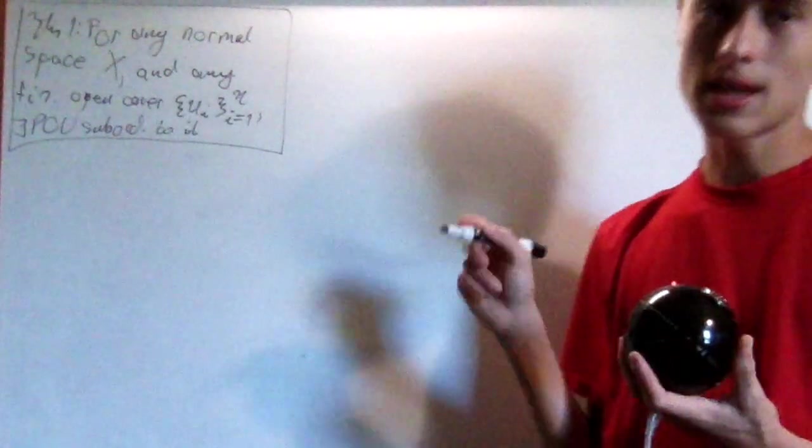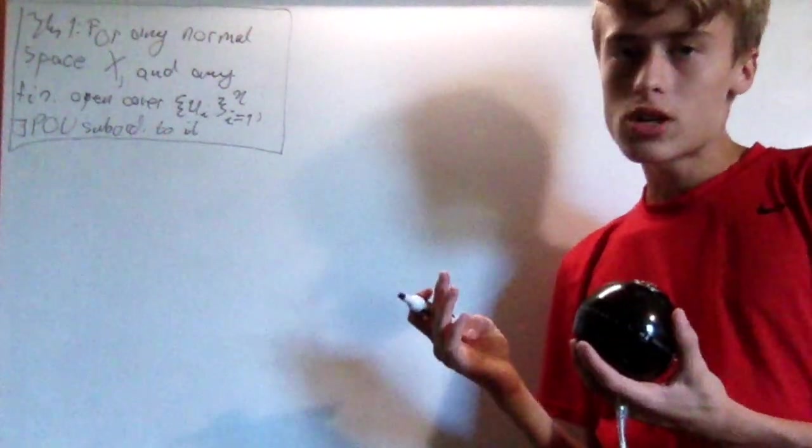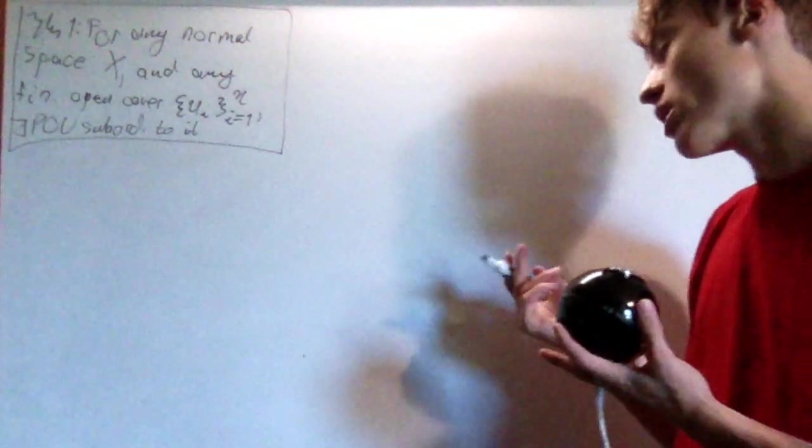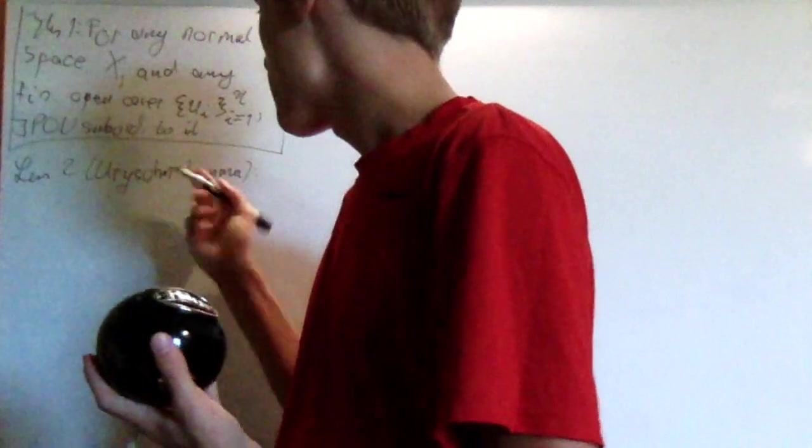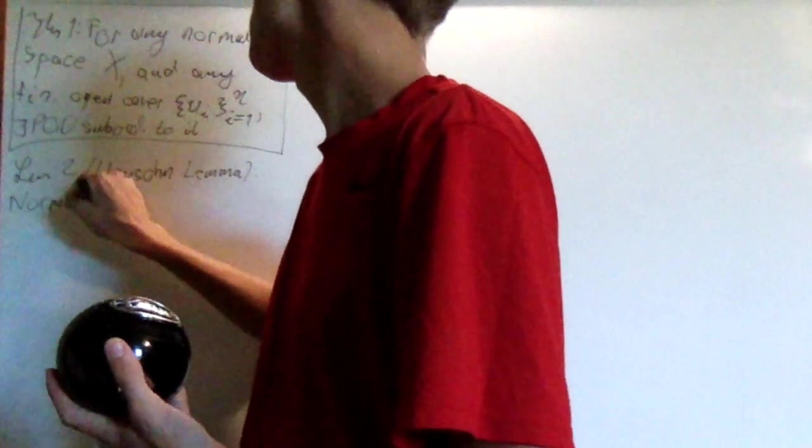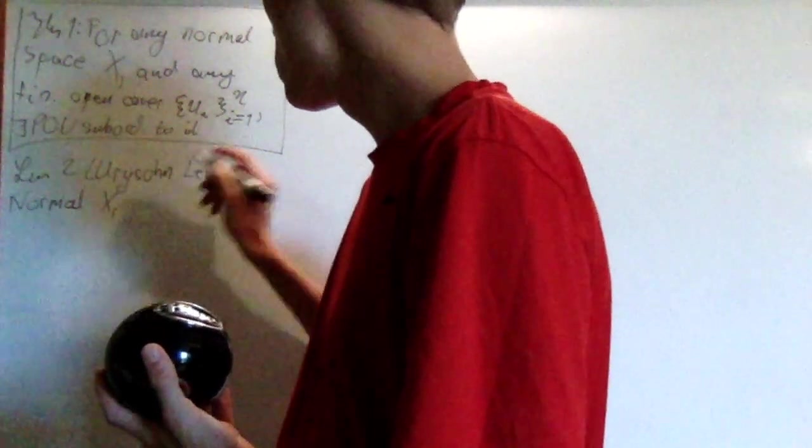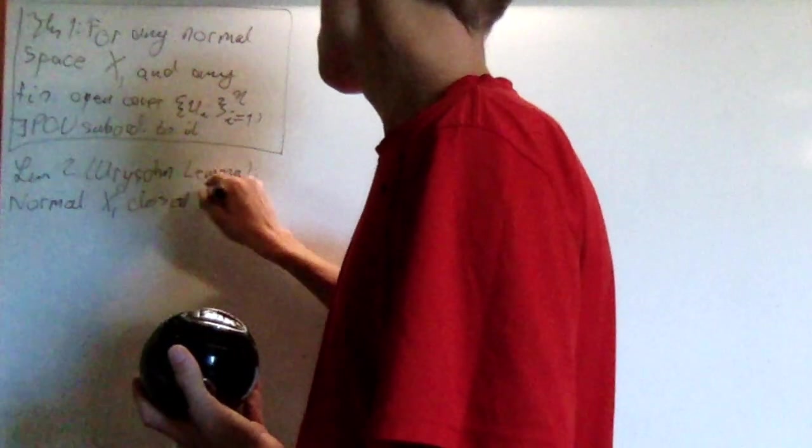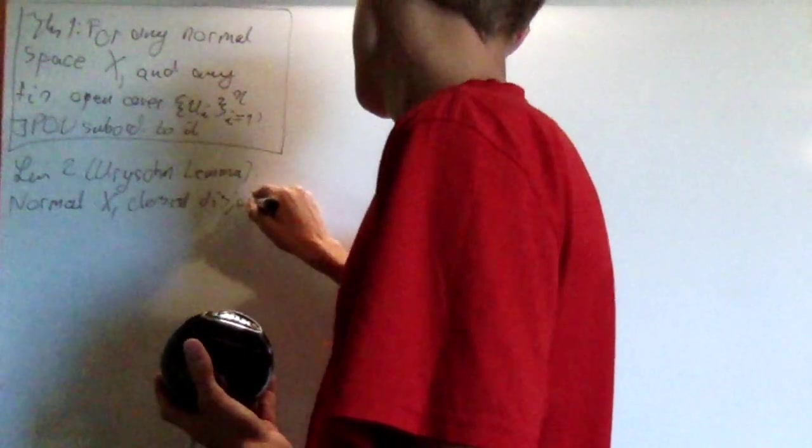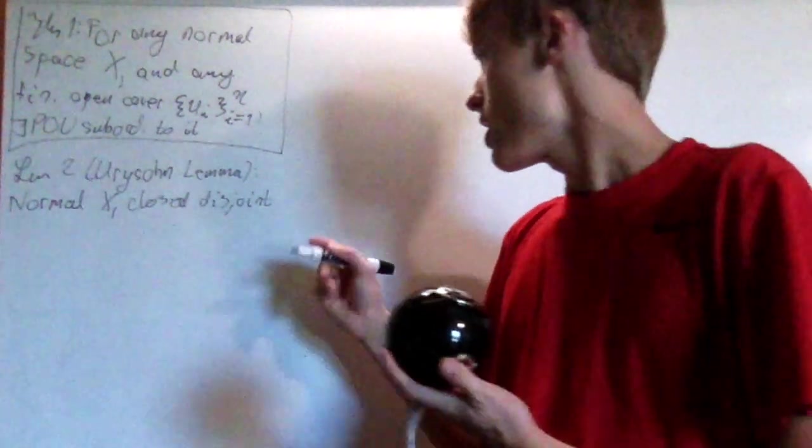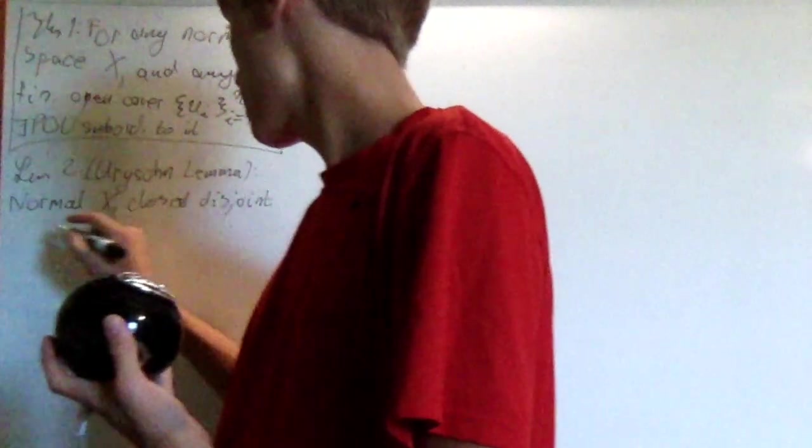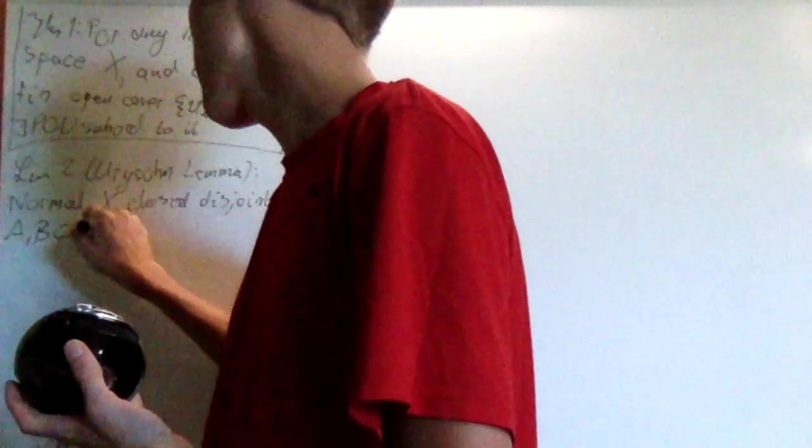However, what we're going to need is a much stronger, I guess, a much more general theorem. And it's actually called a lemma, and it's the Uri-san lemma. What the Uri-san lemma says is that if I have a normal space x and then two closed disjoint, so their intersection is empty and they're closed subsets, so their complements are open, two closed disjoint subsets a and b of x.